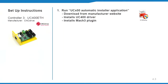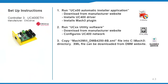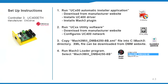Follow the UC400 manufacturer's instructions for installation details. Run the UC automatic installer application to install the UC400 driver and Mach 3 plugin. Run the UC utility software to configure the network. Copy the DMB breakout board configuration XML file into the Mach 3 directory. Run Mach 3 loader and select the DMB4250 profile. Select UC400 as the plugin, then clear reset and finish.